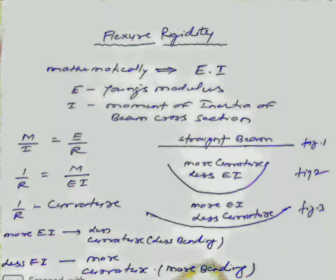From this relation, it is clear that more EI means less curvature, which means less bending as shown in figure 3. Whereas less EI means more curvature or more bending as shown in figure 2.